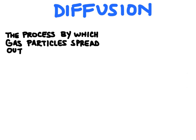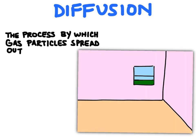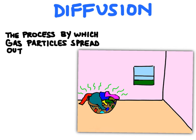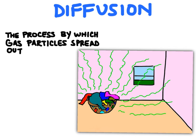You can also think of it another way. Maybe you've experienced having a pile of dirty clothes in your bedroom before, and over time that smell is not just going to sit around those dirty clothes — it's eventually going to permeate throughout the entire room. And so that is diffusion.